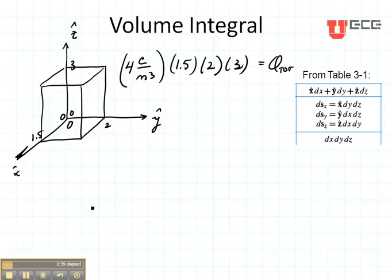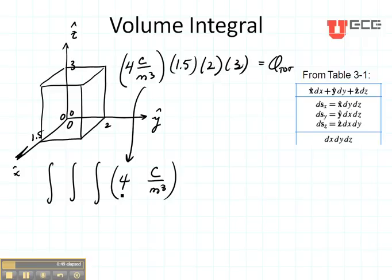Let's see how to do this with a volume integral. A volume integral is going to be a triple integral. I'm going to bring my function right here, 4 coulombs per meter cubed, and then I'm going to use my volume. This is dV, so I'm just going to put that right here: dX, dY, and dZ.